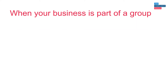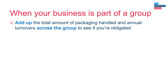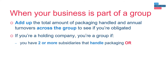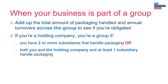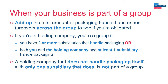So what do you need to do when your business is part of a group? You need to add up the total amount of packaging handled and the annual turnovers across the group to see if you are obligated. If you are a holding company and have two or more subsidiaries that handle packaging, or both you and the holding company and at least one subsidiary handle packaging, then you are classed as a group. A holding company that does not handle packaging itself, with only one subsidiary that does, is not part of a group.